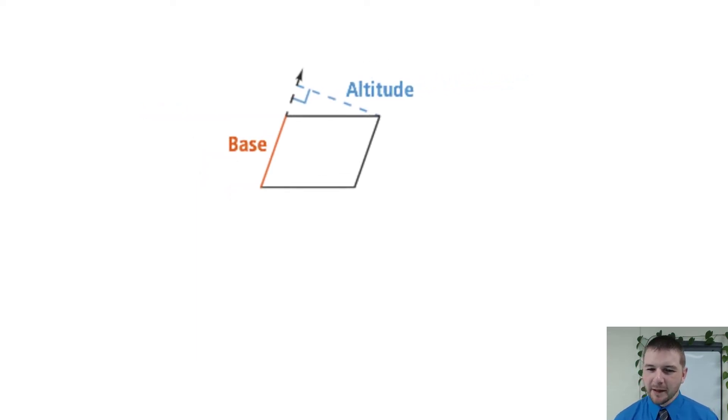In the second diagram, we're using the left side as the base. In this case, the altitude is actually outside of the parallelogram but still perpendicular to the line that contains the base.